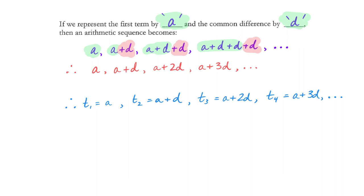What I just highlighted in green and red — that purple — could all be simplified, because within a number of those terms we have multiple Ds. We can collect like terms, and what we end up getting is the red sequence. So to talk generically about any arithmetic sequence: first term A, second term A plus D, third term A plus 2D, fourth term A plus 3D, and so on.